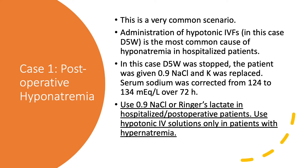We stopped the D5W, gave the patient 0.9 isotonic saline, and replaced potassium. Over the next three days, his serum sodium corrected from 124 to 134. So in hospitalized or postoperative patients in particular, use isotonic solutions — 0.9 normal saline or lactated Ringer's. Do not use hypotonic solutions unless the patient has hypernatremia.